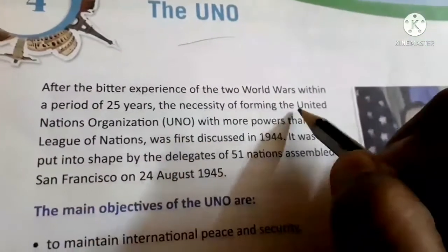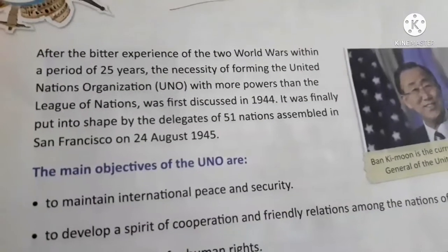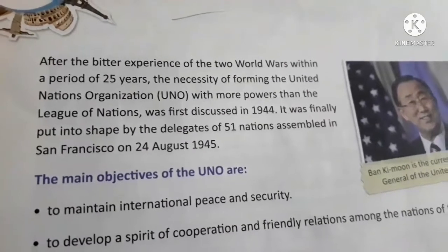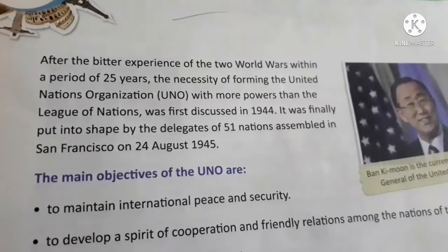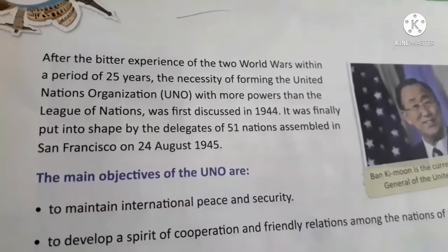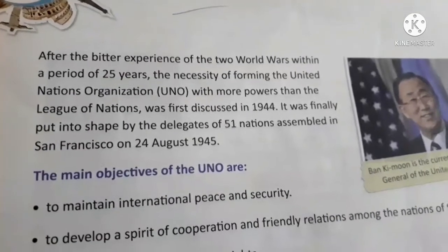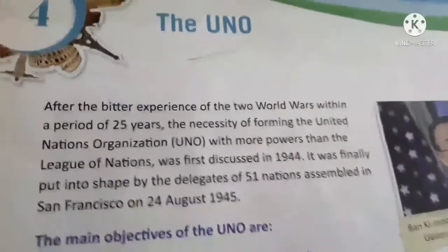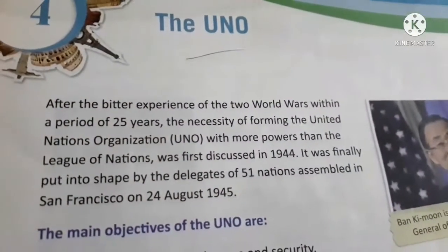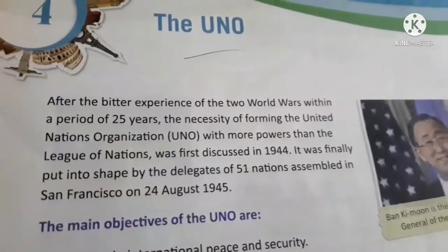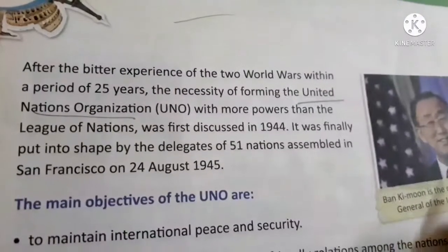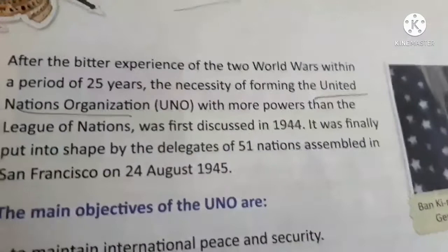Now let us see some information about the UN. After the bitter experience of two world wars within a period of 25 years, the necessity of forming the United Nations Organization with more powers than the League of Nations was first discussed in 1944. It was finally put into shape by delegates of 51 nations assembled in San Francisco on 24th August 1945. UNO stands for United Nations Organization.